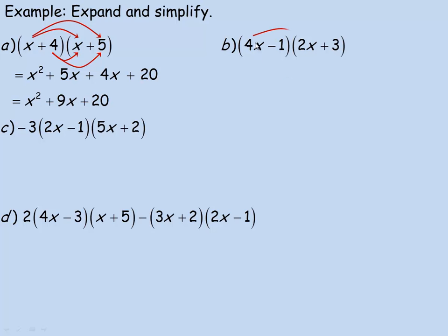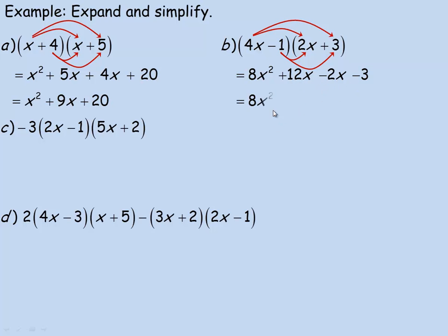Example b — same idea. 4x times 2x is 8x squared. Then 4x times 3 would be 12x. Negative 1 times 2x is negative 2x, and negative 1 times 3 gives you minus 3. Again the like terms are the x terms in the middle: 12x minus 2x is 10x. So this simplifies to 8x squared plus 10x minus 3.